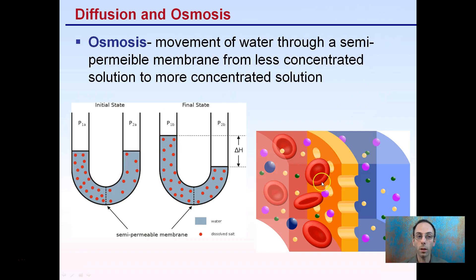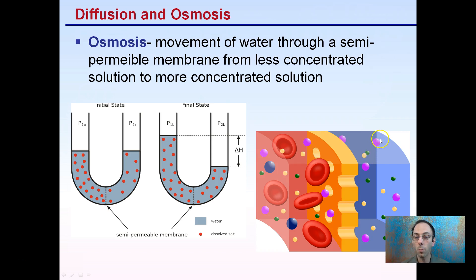Osmosis is the movement of water through a semi-permeable membrane from a less concentrated solution to a more concentrated solution. A semi-permeable membrane is one where only some things can pass through. You can see the large red molecules can't pass through here, but the smaller purple, green, and yellow ones can. It's semi-permeable — some things can pass through. We see the evidence here: movement from a less concentrated solution to a more concentrated one.